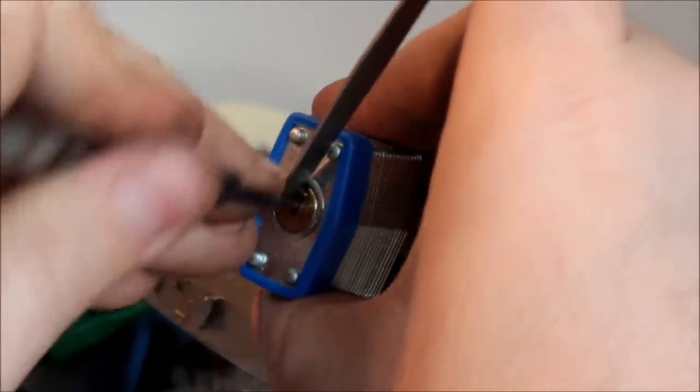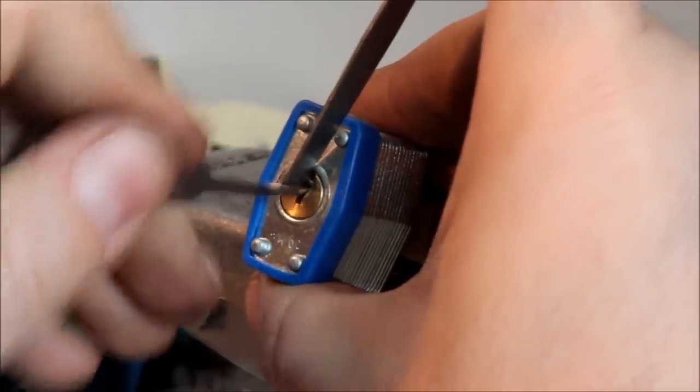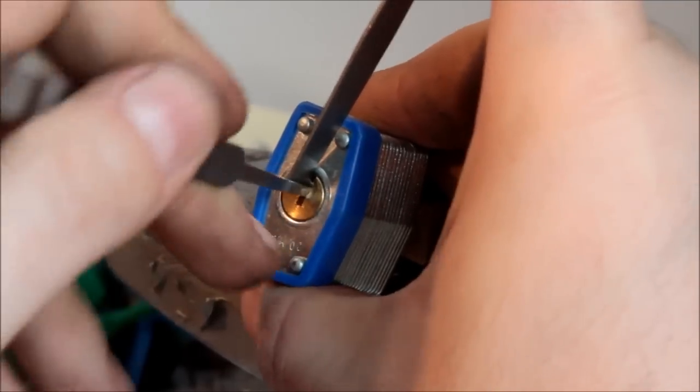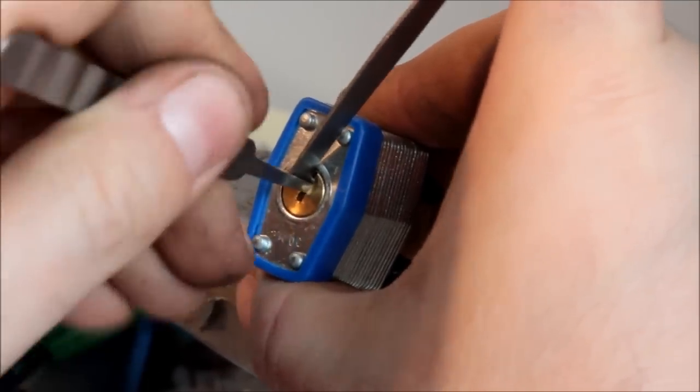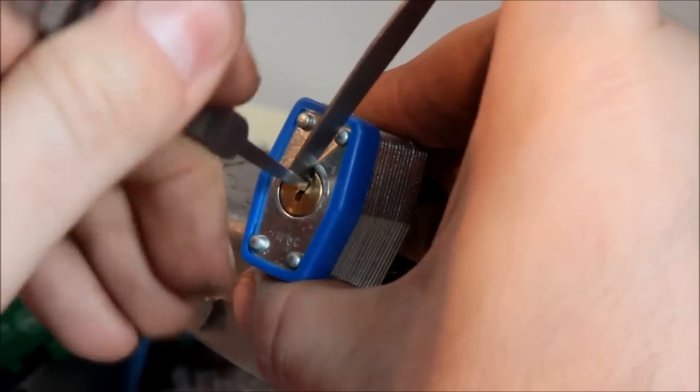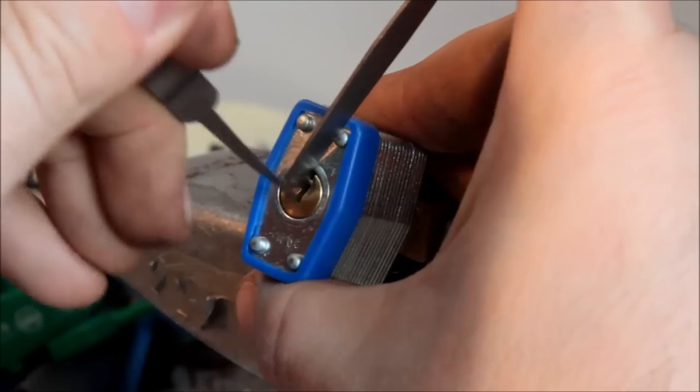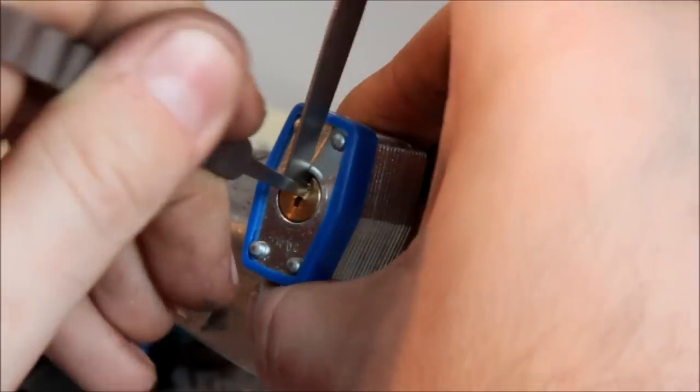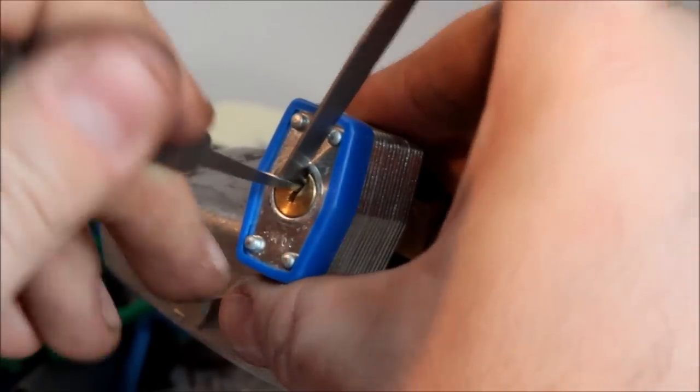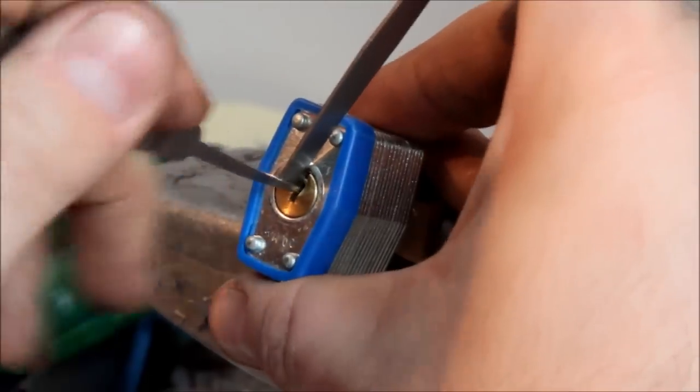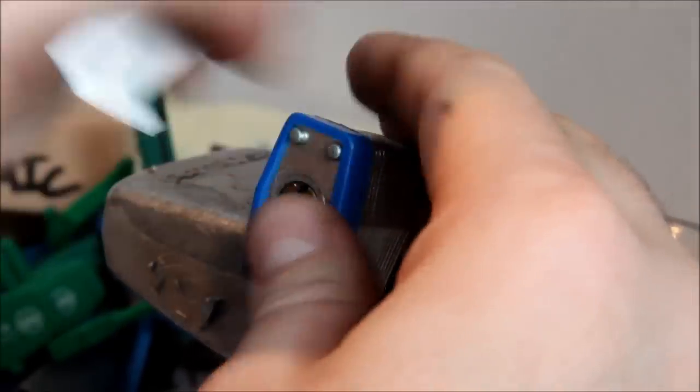Now the key when you're doing this with any of these sort of rake type, random type techniques is simply to keep modulating tension on and off. Okay, something's set. Because you're going to overset stuff and that's okay, but you want to let it come back out. I'm not liking that so much. I'm going to go back to the top of the keyway.